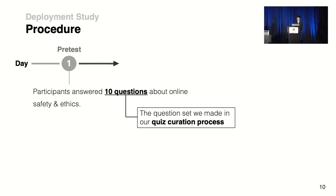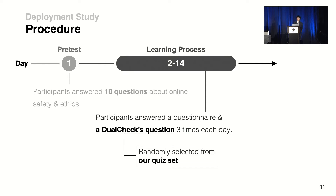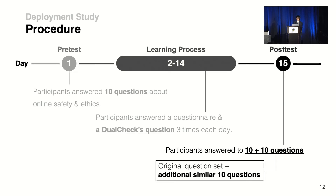On the first day, participants answered ten online safety and ethics questions as a pre-test. During the deployment study, participants answered a survey and then responded to a Dual Check question three times each day, with questions selected from the quiz set. On the final day, participants answered the original ten questions again, and also answered another similar ten-question set.